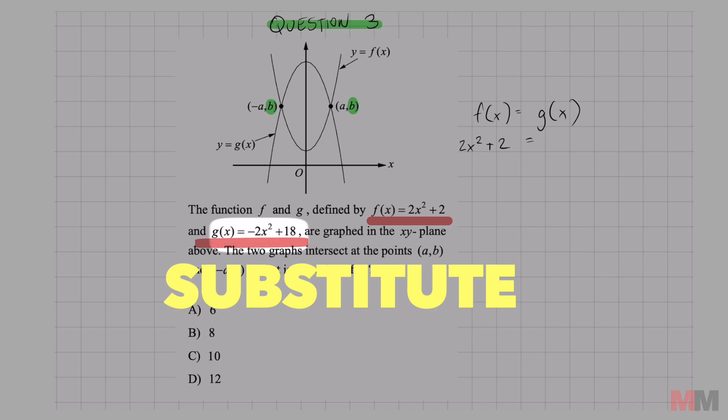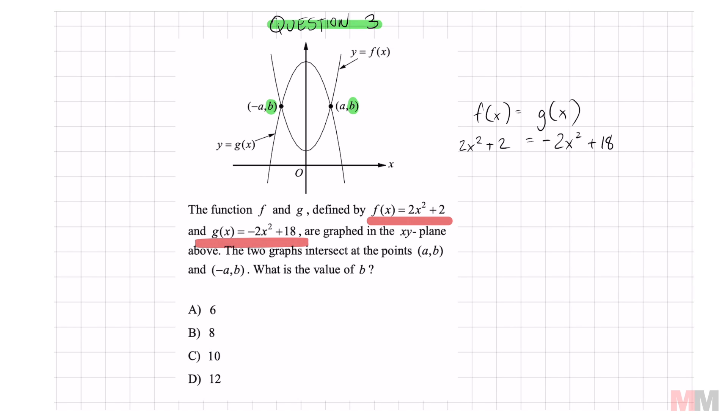The function of f is written with the expression 2x squared plus 2. And the function of g is written with negative 2x squared plus 18. Let's solve for x. Add 2x squared to both sides. I got 4x squared plus 2 equals 18. And do the rest of it. You got 4x squared equals 16. Divided by 4. And you get x squared equals 4. To undo a square, you could just square root. So my two answers are x equals 2 or x equals negative 2.